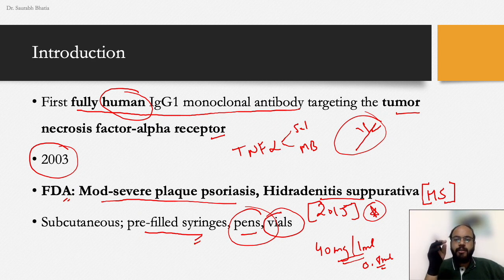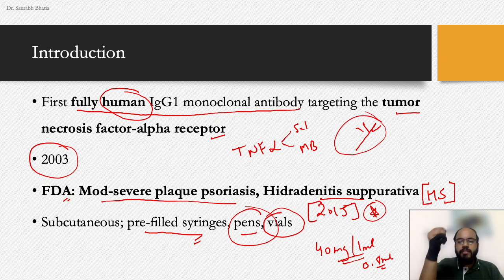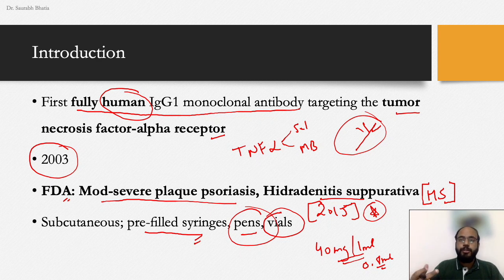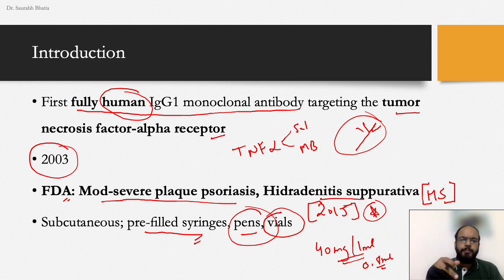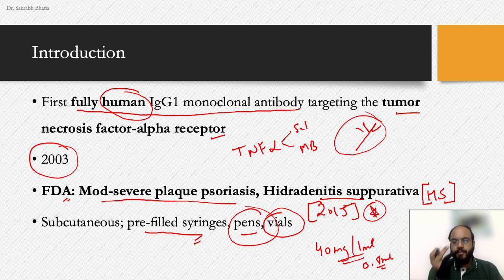Adalimumab is indicated for adult patients with moderate-to-severe chronic plaque psoriasis who are candidates for systemic therapy or phototherapy, and when other systemic therapies are medically less appropriate or have failed. Other immunosuppressive agents acting on the TNF-alpha pathway may not work either if they fail. A relative advantage of biologicals like adalimumab is its safer profile, though it is significantly more costly than methotrexate.